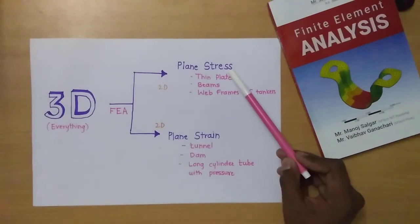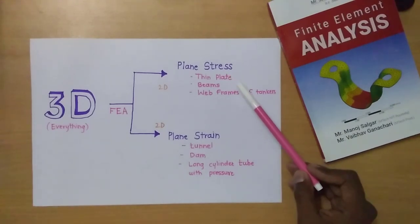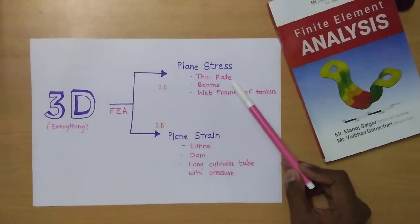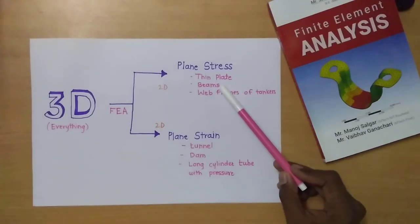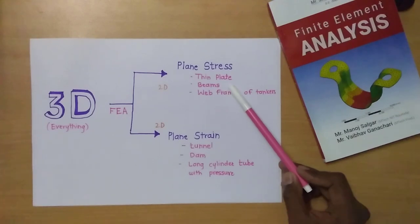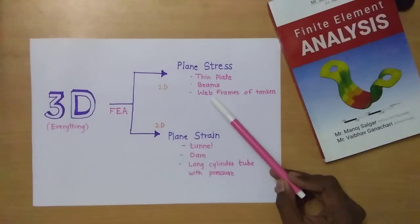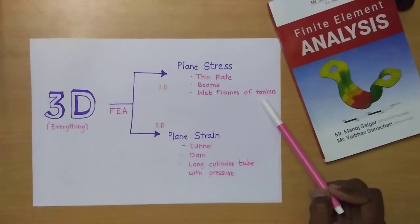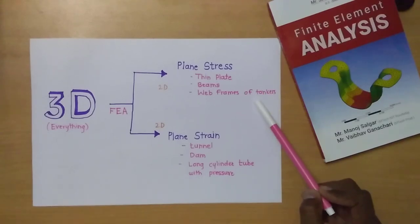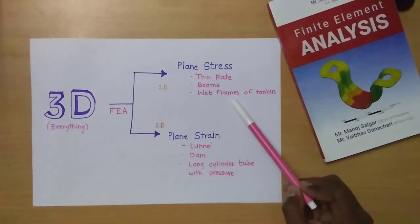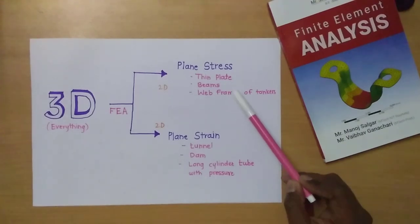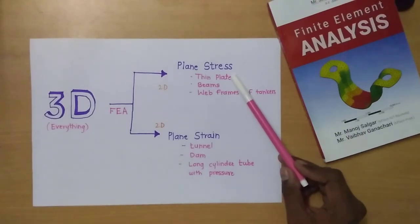For plane stress, some examples are: a thin plate having small thickness, beams of uniform small cross sections, and web frames of tankers — meaning there are some circular tankers where wave frames are used at the ends to support them. These wave frames come under plane stress conditions.